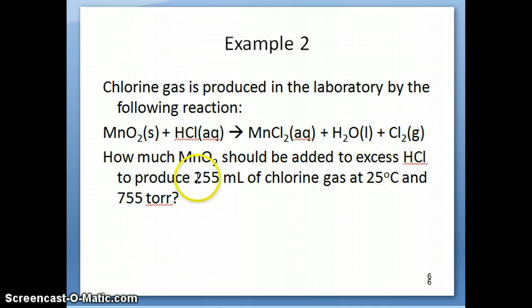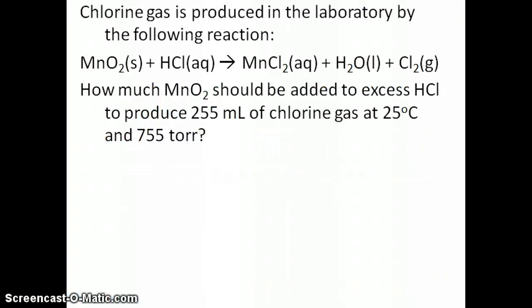In this case we have a certain volume of chlorine gas at 25 degrees and 755 torr. That information has to be converted into moles of Cl2. Once you have the number of moles, it's a matter of relating it to the moles of MnO2 and eventually the mass using your mole-mole relationship from stoichiometry and then molar mass.